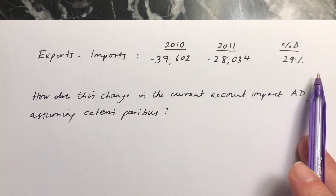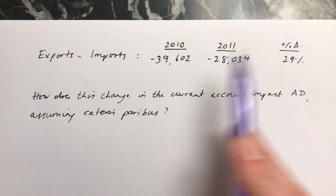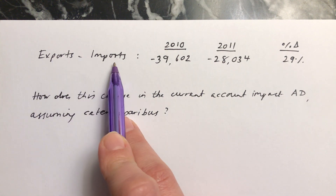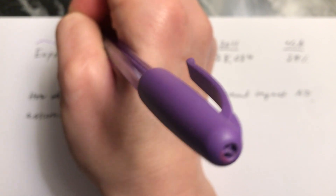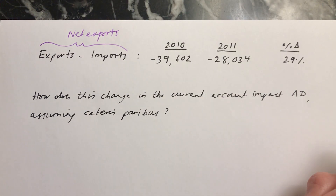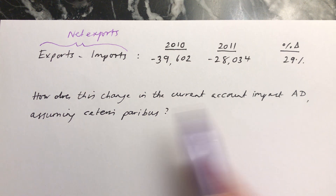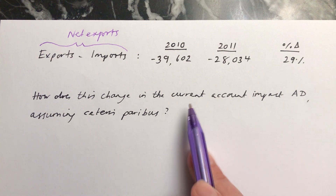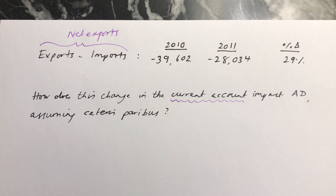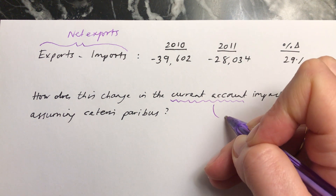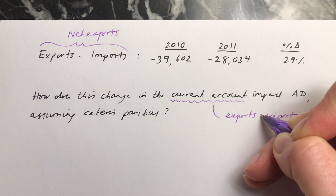There's some information here about what's happened to net exports in 2010 and 2011, and this is the percentage change from 2010 to 2011. Remember, exports minus imports — this is otherwise known as net exports. The question asks how does this change in the current account impact aggregate demand? The current account, by and large, is looking at exports and imports, so it is the same thing — exports minus imports — in this question, because that's all the information that you have.